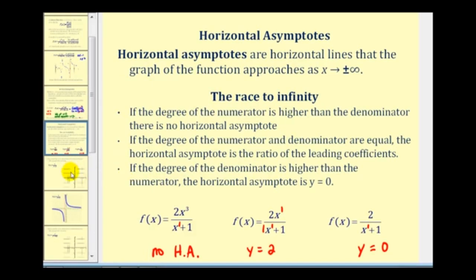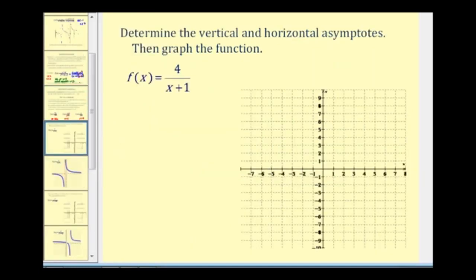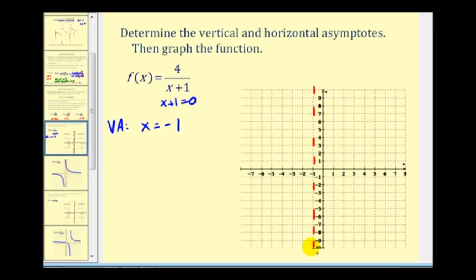Now let's look at examples where we determine vertical and horizontal asymptotes and then graph the function. The numerator and denominator cannot be factored here. For the vertical asymptote, setting x plus one equal to zero gives x equals negative one as a vertical asymptote. For the horizontal asymptote, the degree of the numerator is zero and the degree of the denominator is one, therefore the horizontal asymptote is y equals zero.